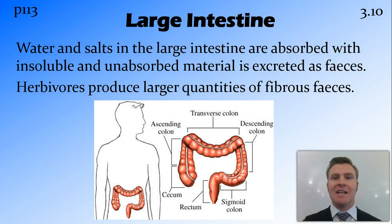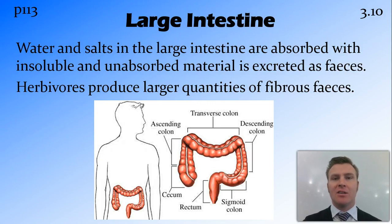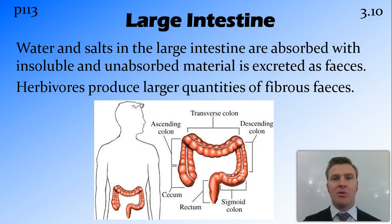The chyme then moves into the large intestine where most of the nutrients have already been absorbed in the small intestine. In the large intestine, the last water and salts are absorbed into the blood. What's left is things that are insoluble or undigested, and these get dried out from the water being absorbed from them and excreted as feces. Herbivores, because of the fibrous food they eat, can't break down all of that food, so they produce large quantities of very fibrous feces.